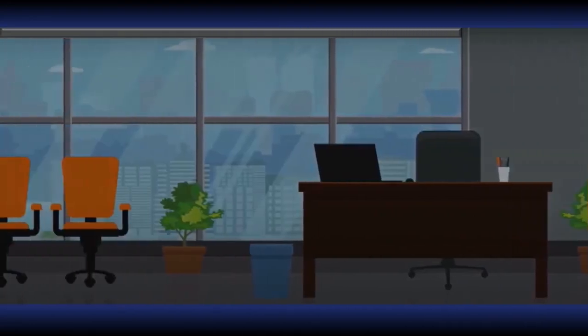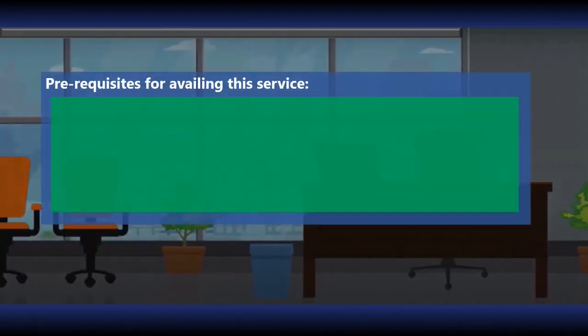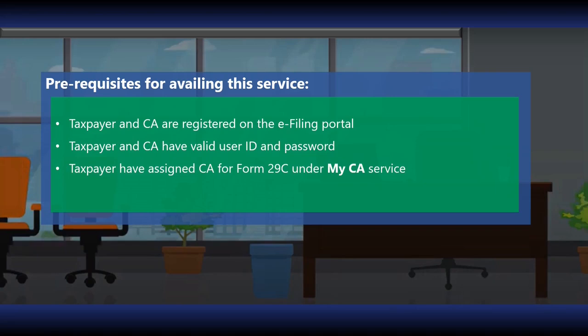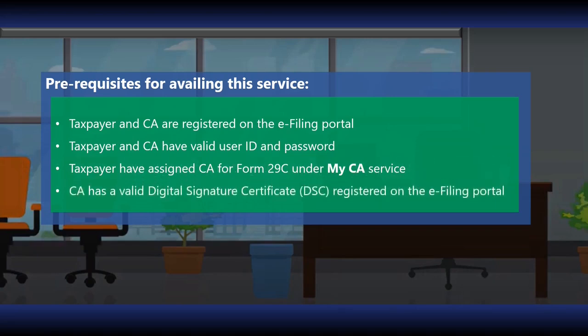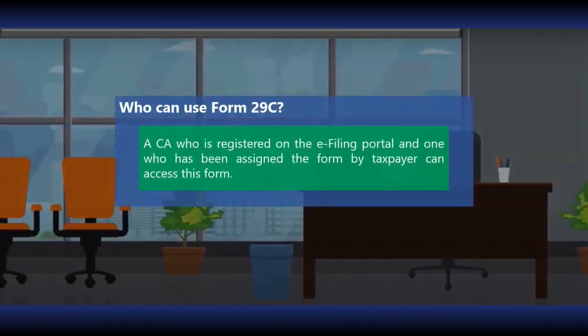Let us look at the prerequisites for filing Form 29C. The taxpayer and the Chartered Accountant should be registered on the e-filing portal and should have a valid user ID and password. The taxpayer should assign Form 29C to a Chartered Accountant, and the Chartered Accountant should have a valid digital signature certificate. The form can be used by a Chartered Accountant who is registered on the e-filing portal and has been assigned the form by a taxpayer.